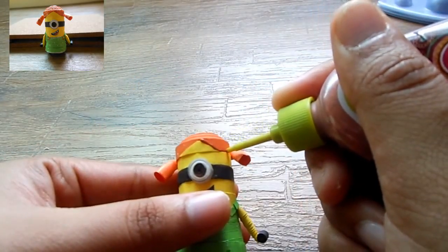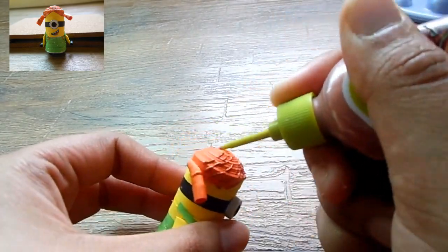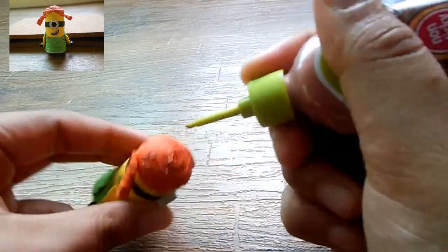I have used some 3D outliners from Fevicryl in pearl metallic copper and silver colors to add some detailing to the finished minion.